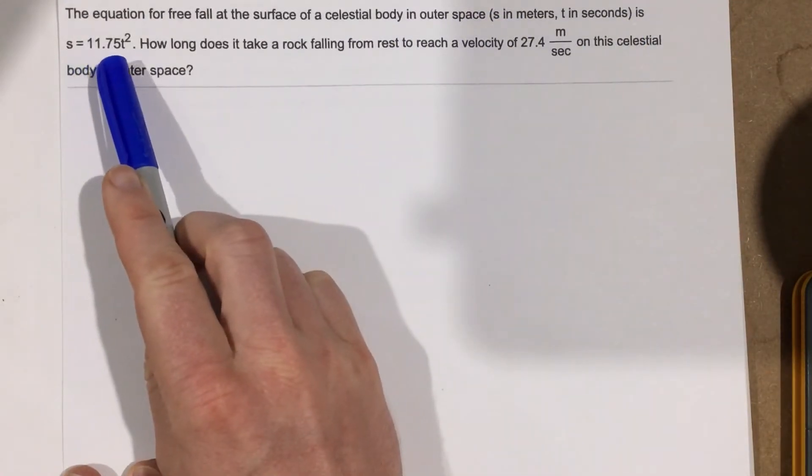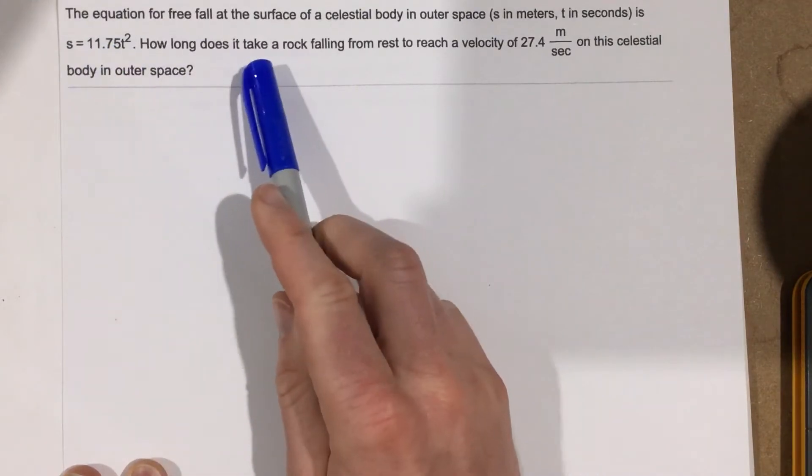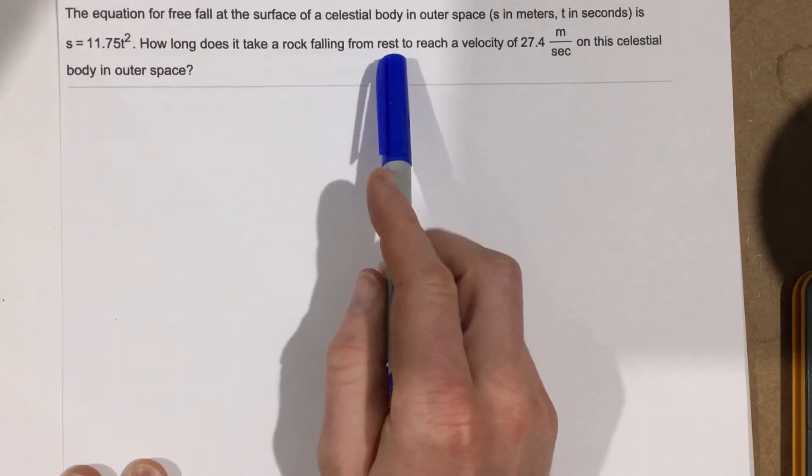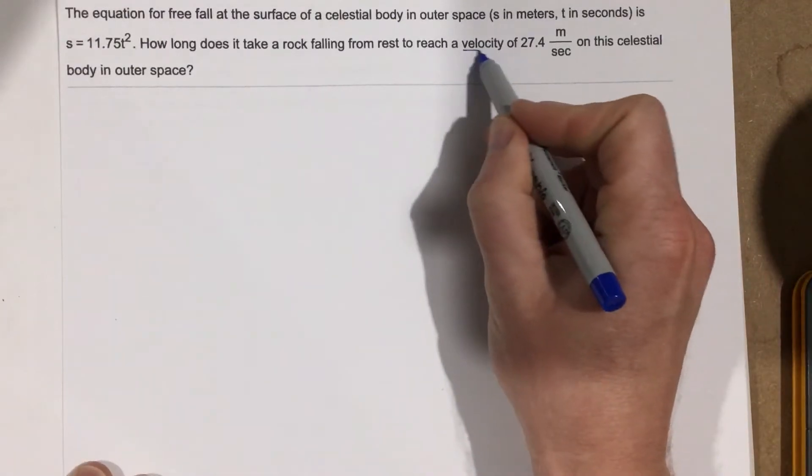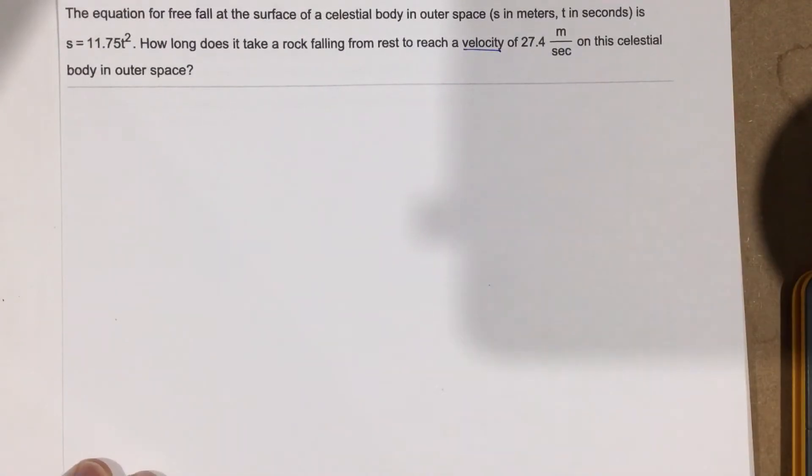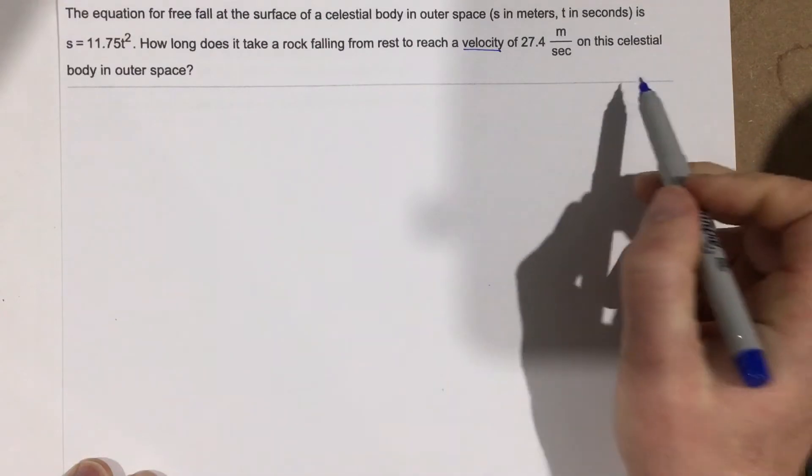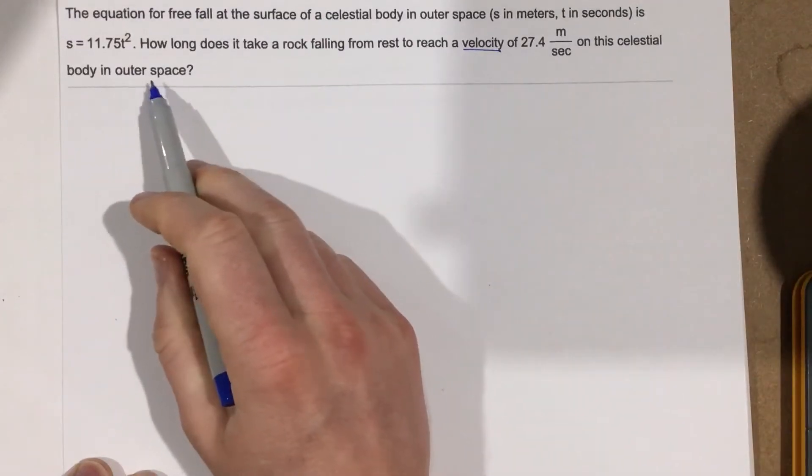is s equals 11.75 t squared. How long does it take a rock falling from rest to reach a velocity of 27.4 meters per second on this celestial body in outer space?